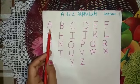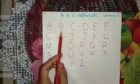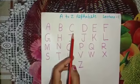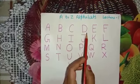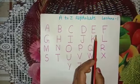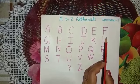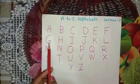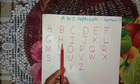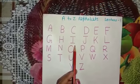A says Apple, B says Ball, C says Cat, D says Dog, E says Elephant, F says Fish, G says Girl, H says Hen, I says Ice Cream.